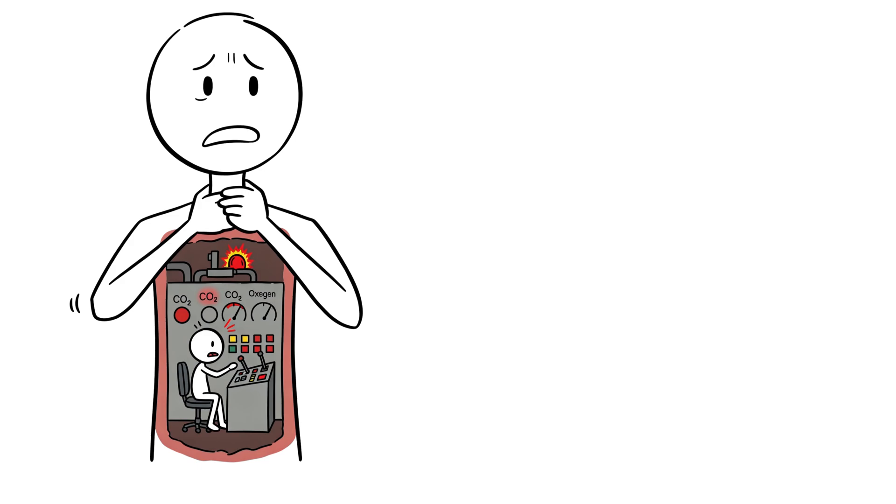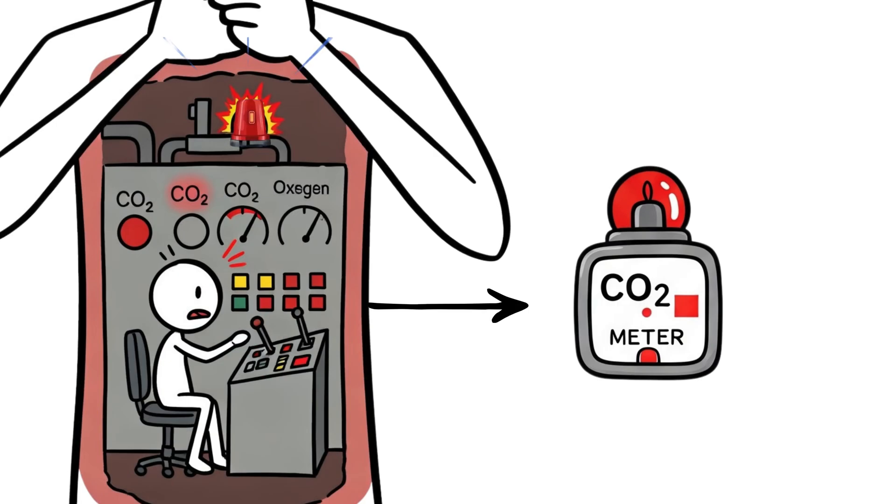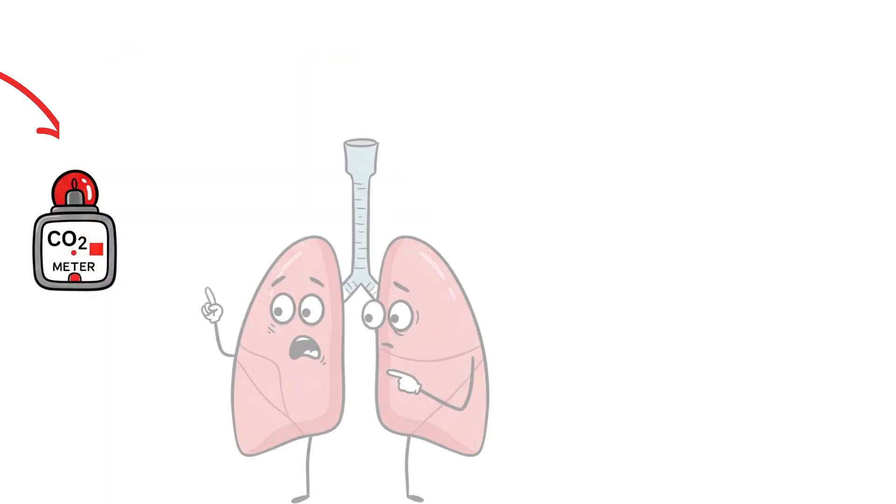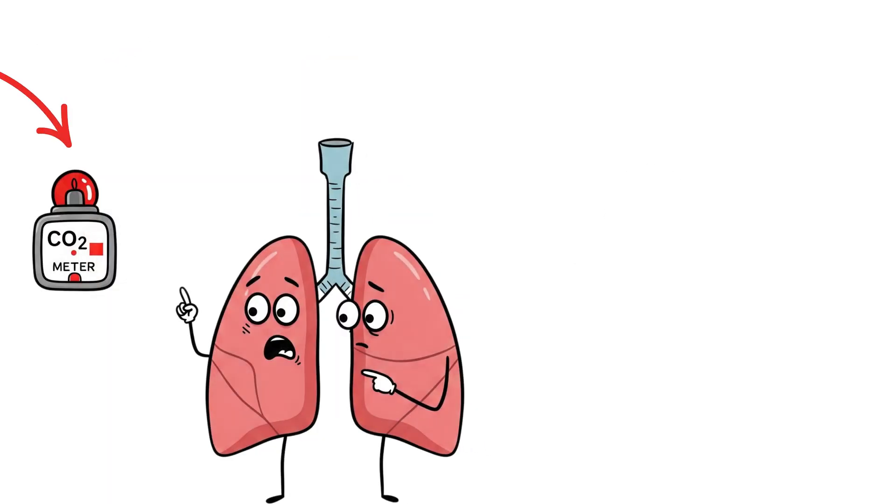Our bodies have a built-in alarm system, constantly monitoring the levels of various substances in our blood, including CO2. When these levels rise above a certain threshold, the alarm goes off, triggering a cascade of physiological responses.